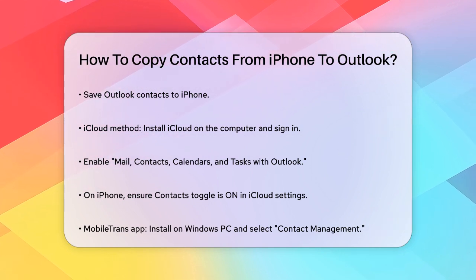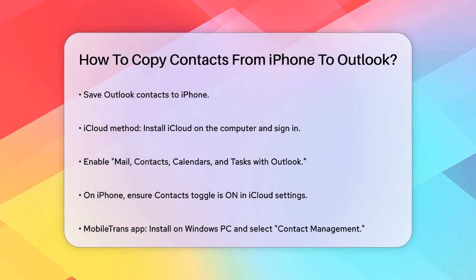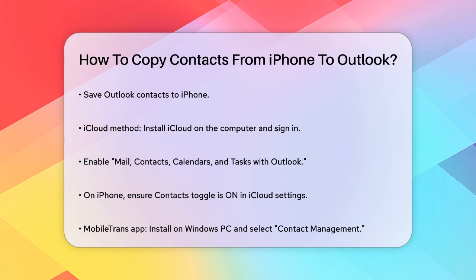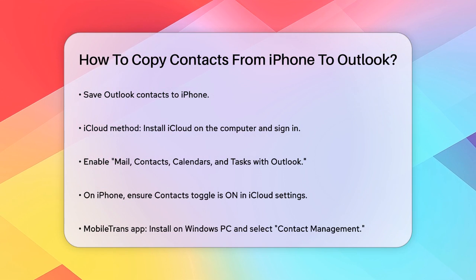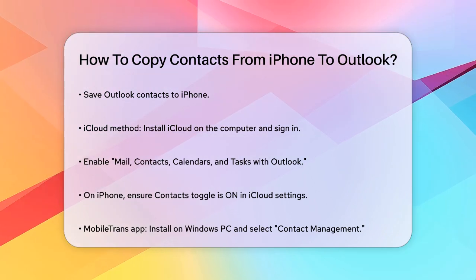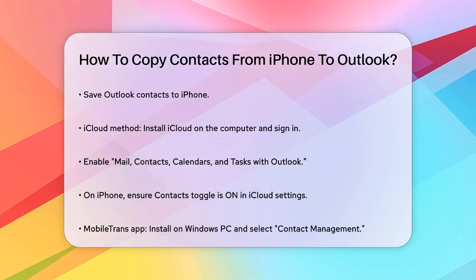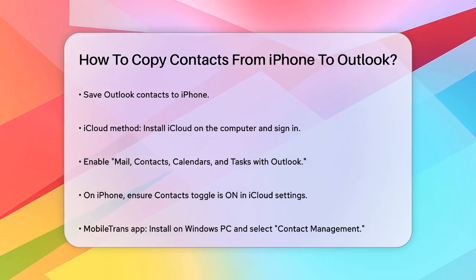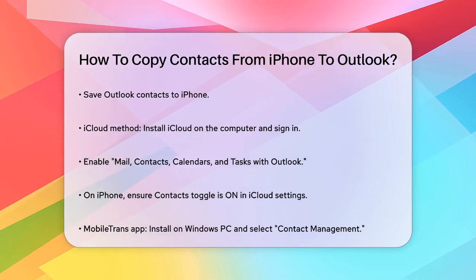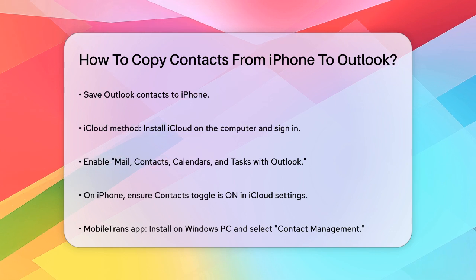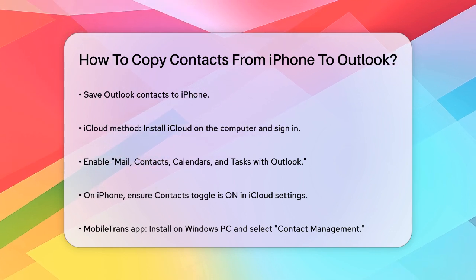On your iPhone, go to Settings, select your name, then iCloud, and make sure the Contacts toggle is turned on. This will sync your Outlook contacts with iCloud, which in turn will sync them with your iPhone.